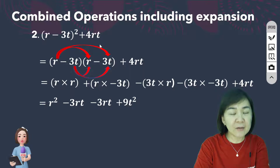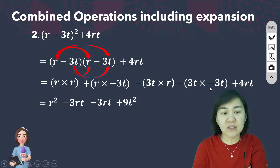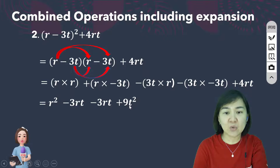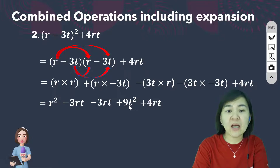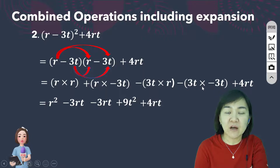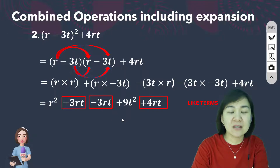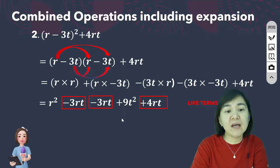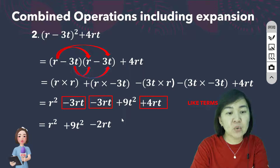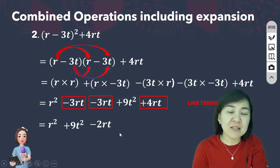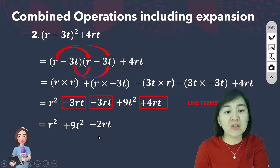Continuing the expansion: negative 3T times negative 3T - negative times negative becomes positive - gives positive 9T squared. Then plus 4RT. Be careful: negative times negative returns a positive number. Now find the like terms: negative 3RT, negative 3RT, and plus 4RT. After simplifying the like terms, the final answer is R squared plus 9T squared minus 2RT, arranged by highest power first.